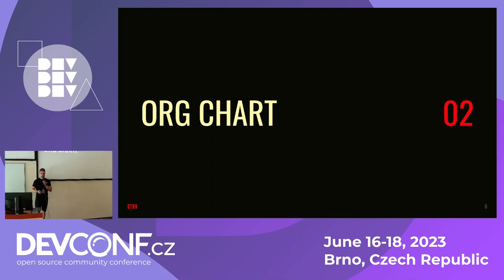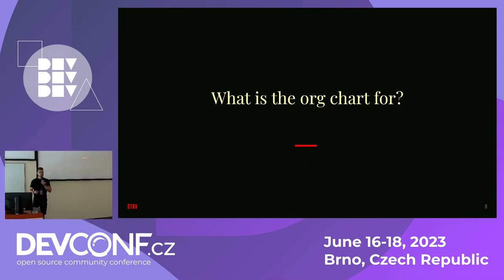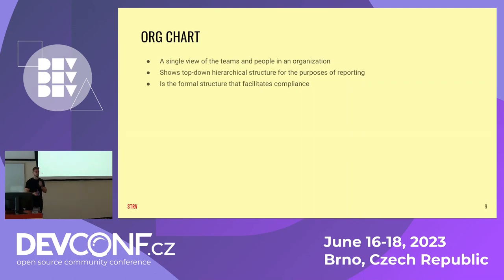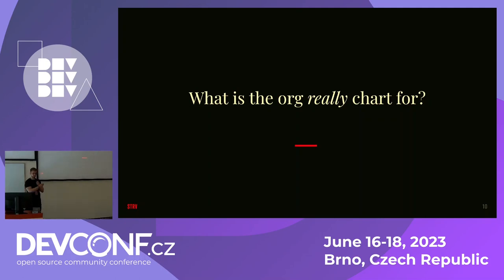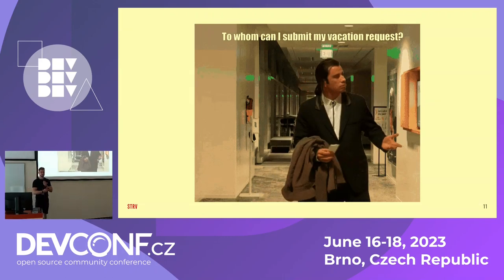So what can we do to make their reflections a little bit easier? Let's start with an org chart. I'm pretty sure you're familiar with this — it's a pretty standard org chart. At the top there are CEOs and CTOs, then some heads of departments, and later engineering managers and their teams. Pretty standard structure. But what is the org chart actually for? You could say it's a single view of teams and people in the organization — a hierarchical structure for reporting that facilitates compliance. But can you really know what the company is doing or what engineers do just from the org chart? Hardly. So what is it really for? To submit vacation requests — that's all it's good for at this point.